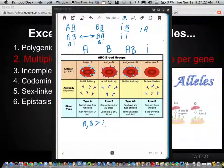Remember, little i codes for no protein. So, if you have the A allele or the B allele, you'll have blood type A or B.